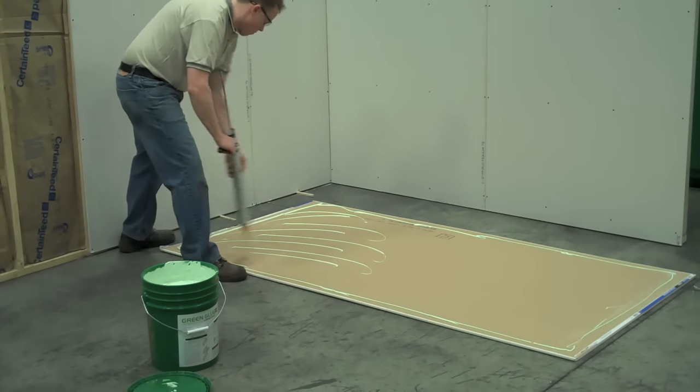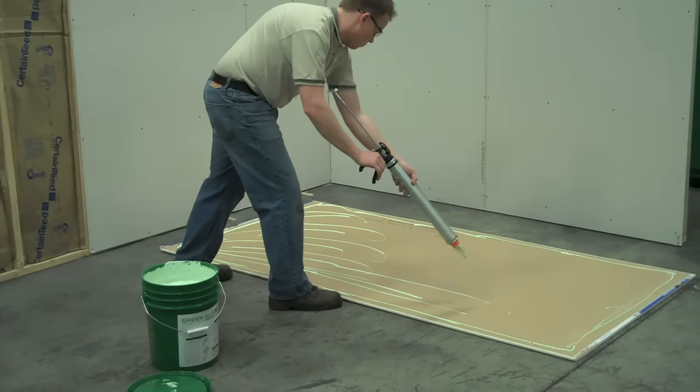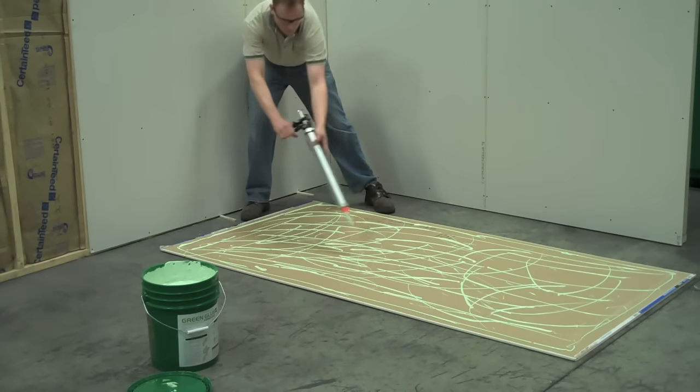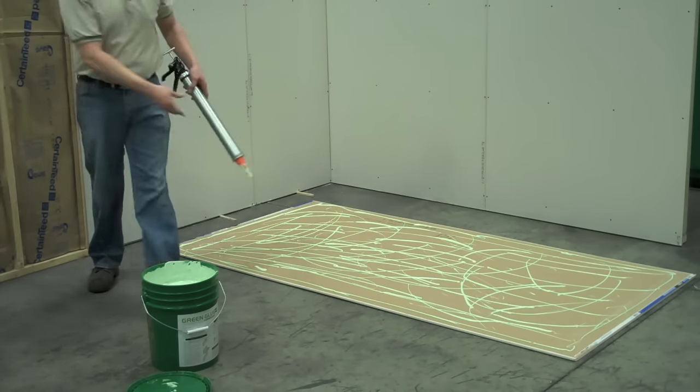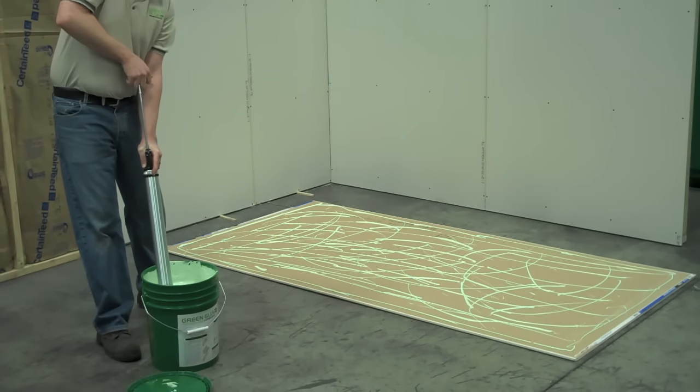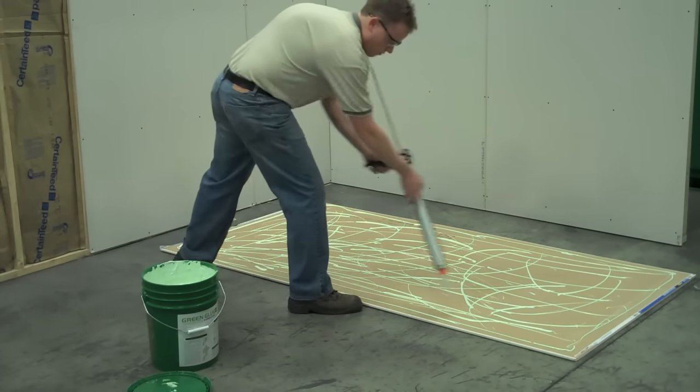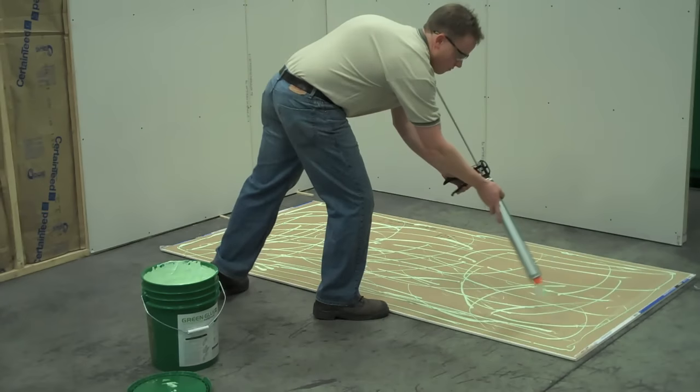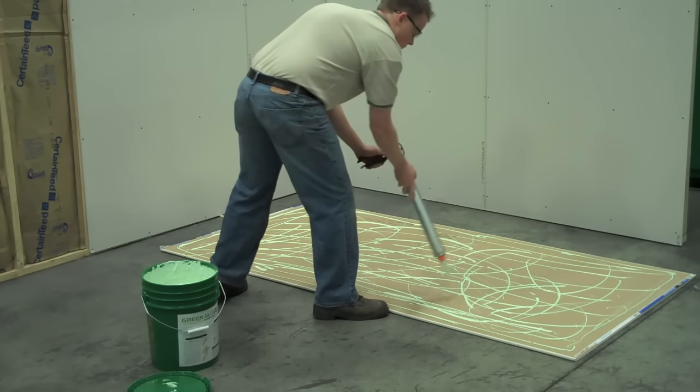You may dispense anywhere from one to three tubes of compound per drywall sheet. Keep in mind that one tube will give you approximately 70% the performance of two tubes. The application pattern does not matter so long as you have distributed compound evenly across the drywall.